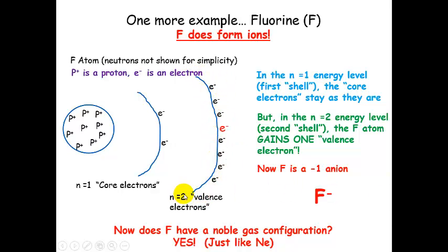So now there are eight electrons in this valence shell. So now fluorine looks like neon and forms a fluoride anion. So this negative charge is going to come from the fact that we have one extra electron versus the number of protons. And now fluorine has a noble gas configuration just like neon because it gained one extra electron.